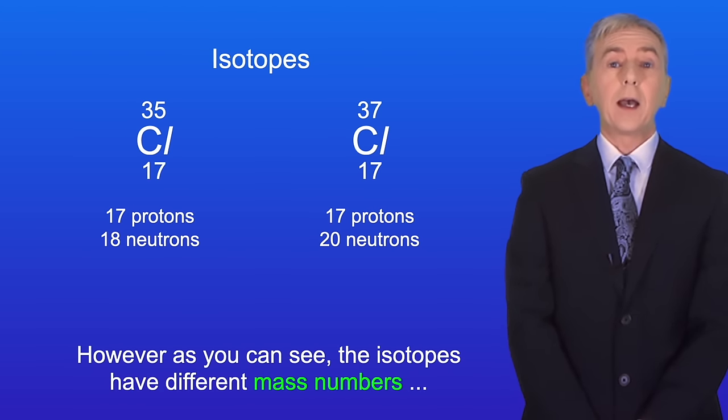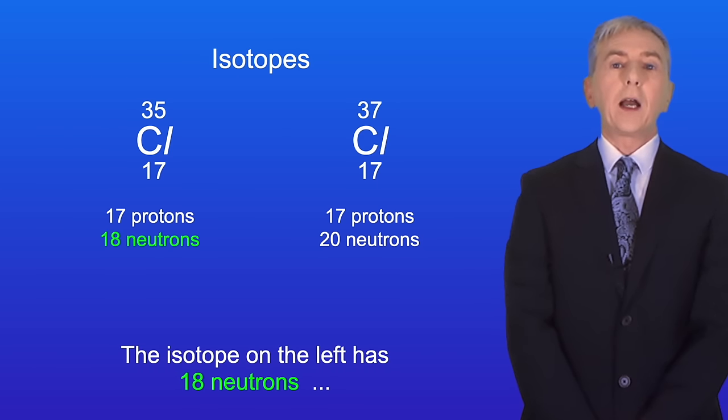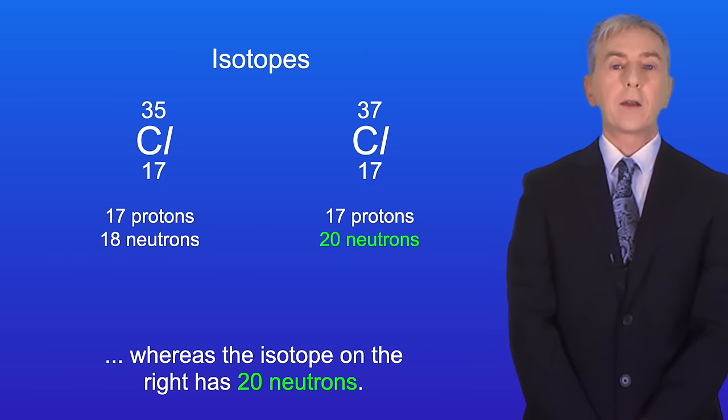However, as you can see, the isotopes have different mass numbers, telling us that they have different numbers of neutrons. The isotope on the left has 18 neutrons, whereas the isotope on the right has 20 neutrons.